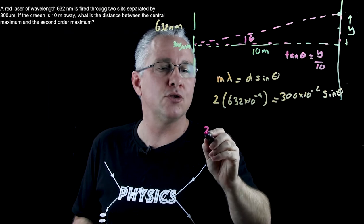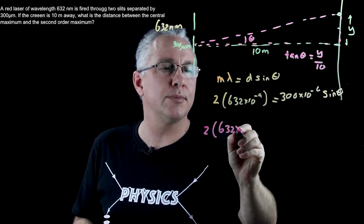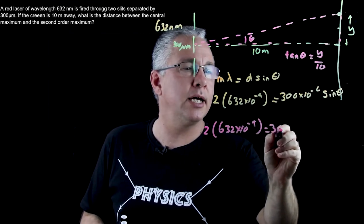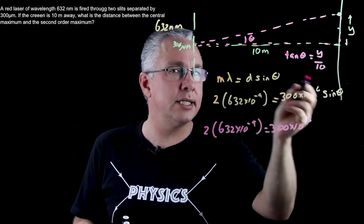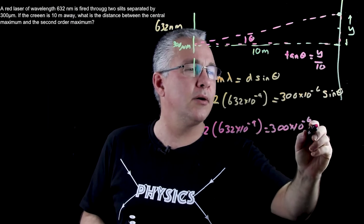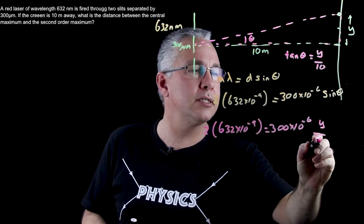So now what I have is 2 times 632 by 10 to the power of negative 9 is equal to 300 by 10 to the power of negative 6. Now our sine theta is, remember, tan theta, so now I can say that is y over 10.